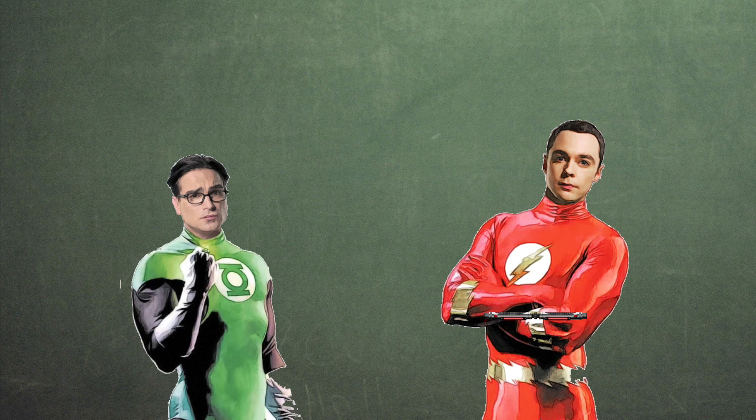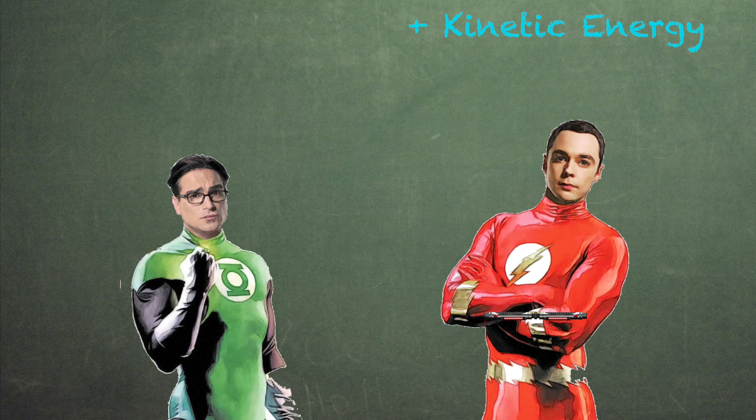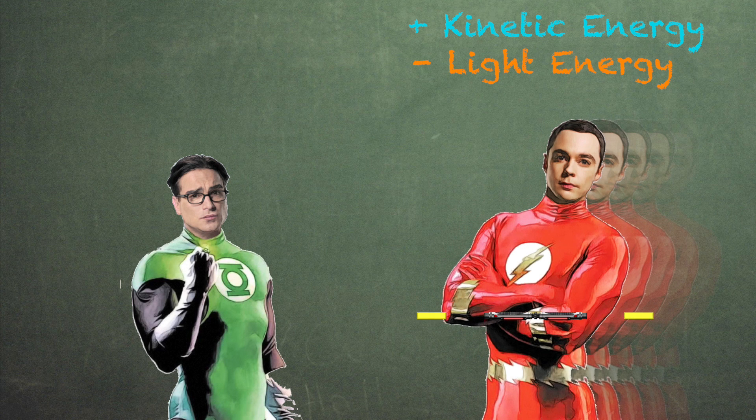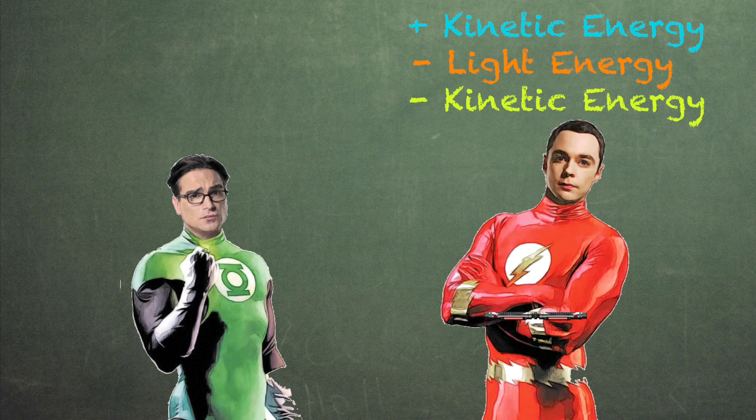In his frame of reference, Leonard is the one who is not moving, and Sheldon will be the one that gains and loses speed. In fact, Leonard first sees Sheldon gaining kinetic energy, then losing the light beam energy, and then losing his kinetic energy. So far, so good.